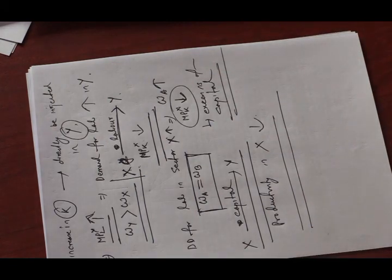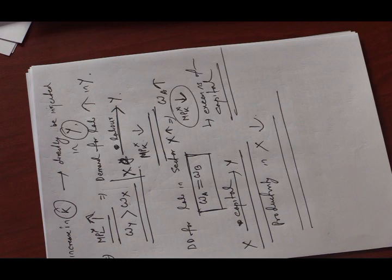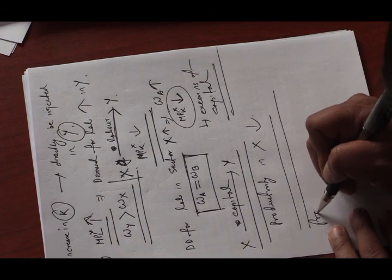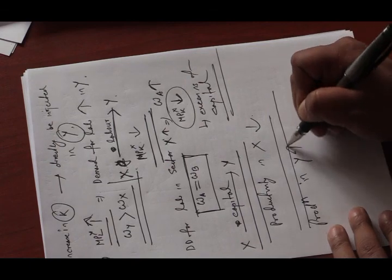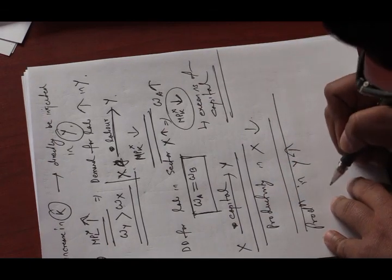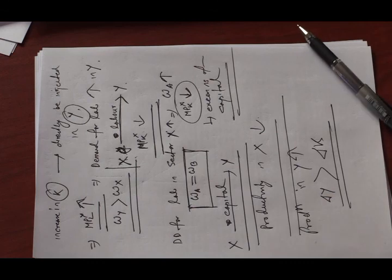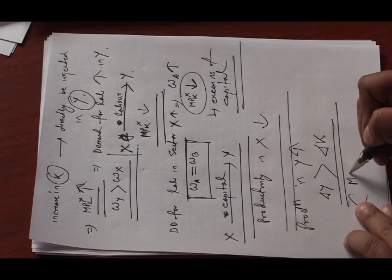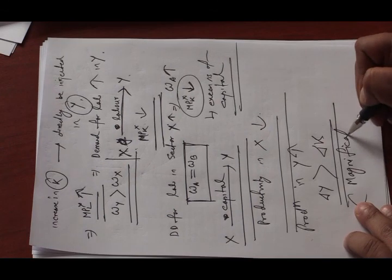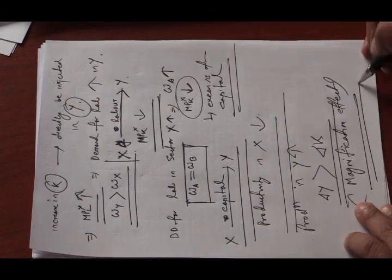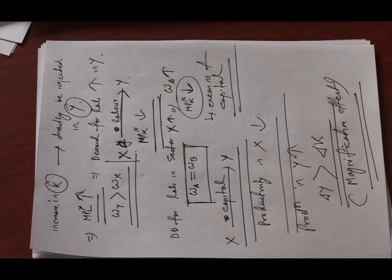On the other hand, sector Y benefits from a double effect: first, the new capital endowment is added directly to Y; and second, sector X is releasing capital which also flows into sector Y. Due to this double effect, the increase in production of Y — that is, ΔY — is greater than ΔK. This is called the magnification effect. The Rybczynski theorem is essentially a magnification effect, and the other sector will be worse off.